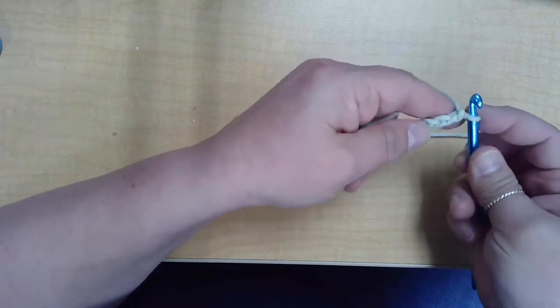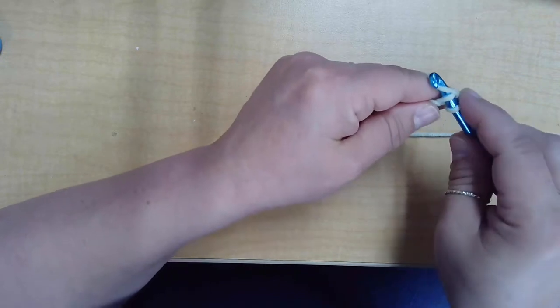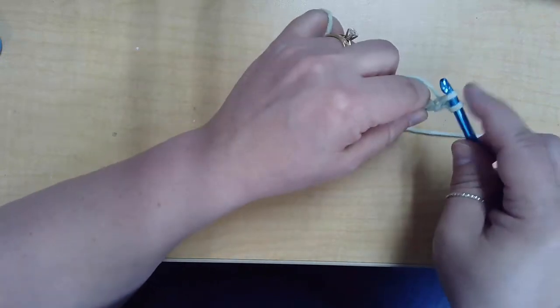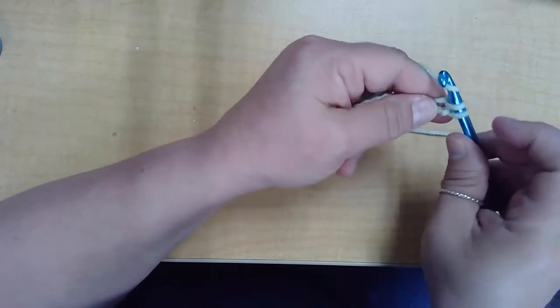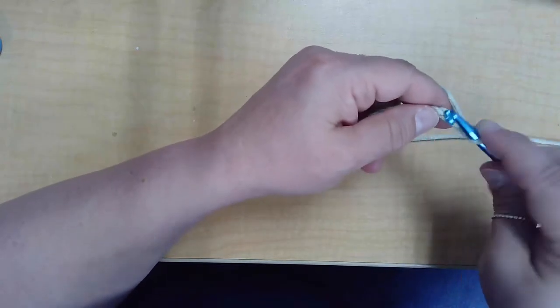That one. And I'm going to put my hook in, put the yarn over, pull it through, yarn over the hook again, and pull through both hoops. And that is a single crochet.